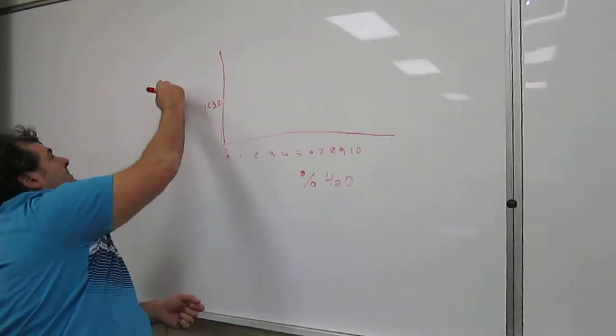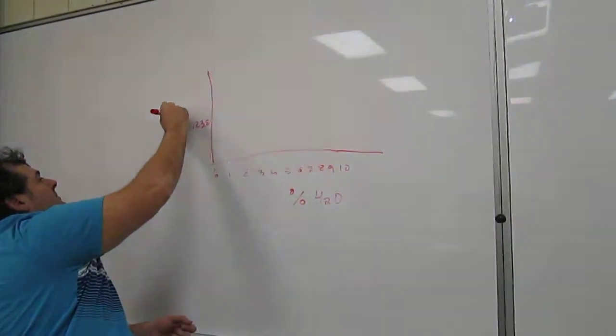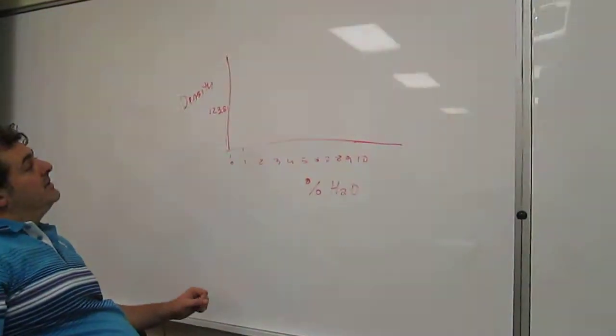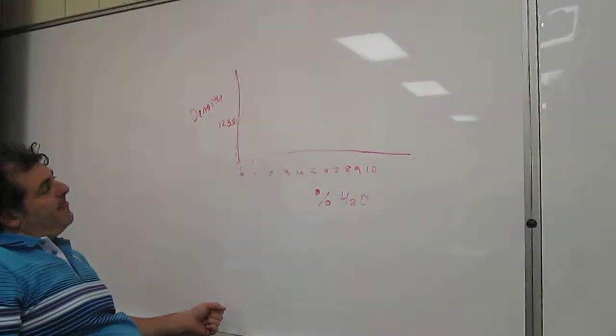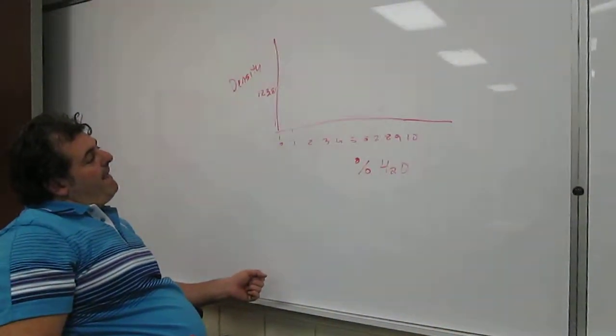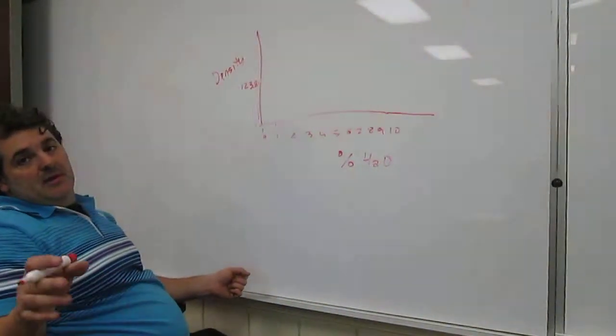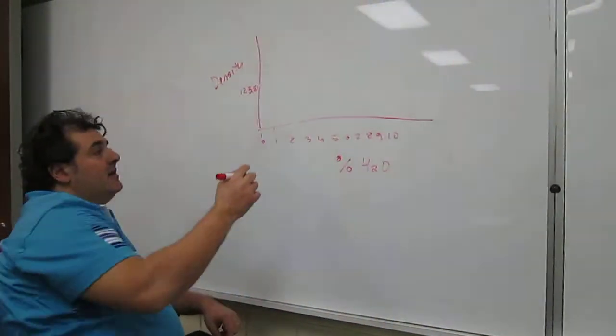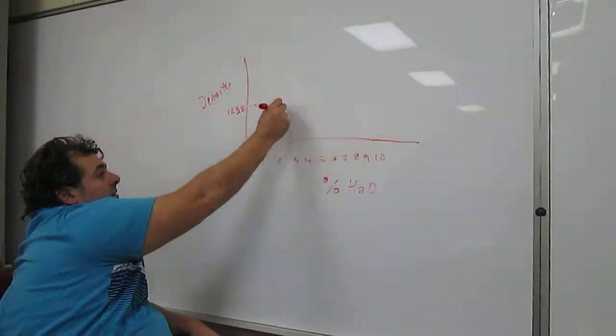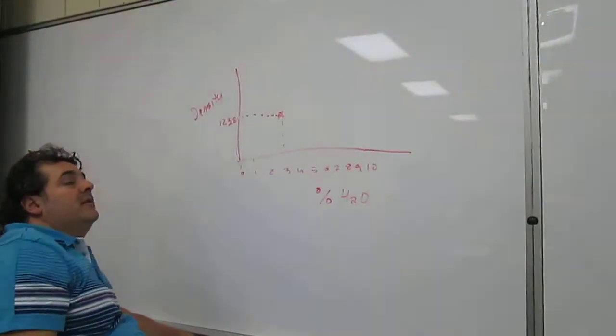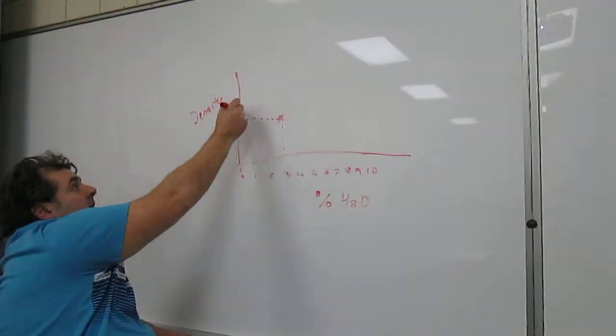So percent moisture is the horizontal axis, and the vertical axis is density. Assume it was three, okay? So that's point one. The second one is over here.